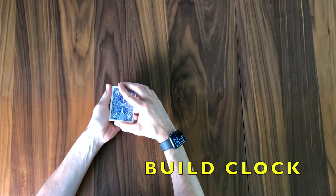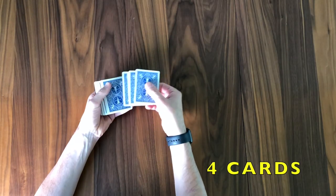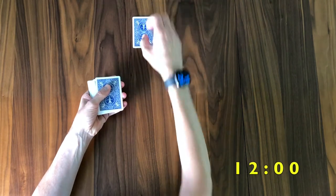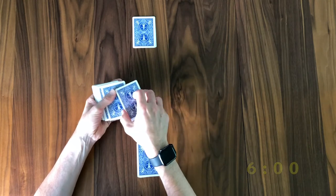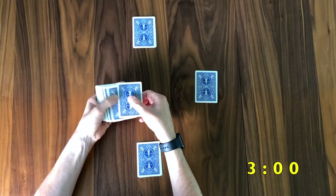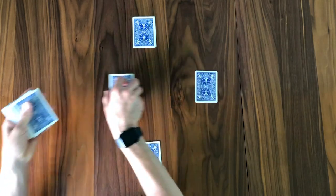Alrighty. So first, let us build the clock face. Take off four cards, as you see here. Place it up at the noon position. This is the way I like to do it. Take four cards for six. Take four cards for three o'clock, and then take four cards for nine.